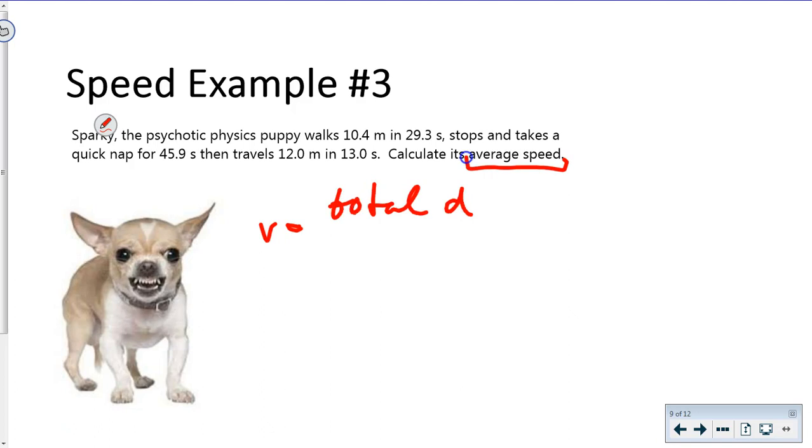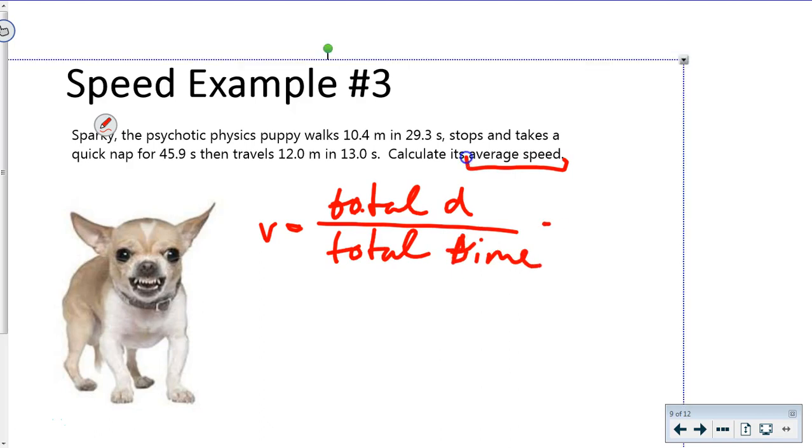To calculate this, we add up our total distance: 10.4 plus 12 gives us 22.4 meters. What's our total time? We have 29.3 seconds, 13 seconds, but he took a nap—this is part of his travel and affects his average. Total is 88.2 seconds.